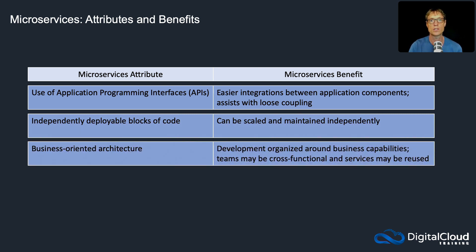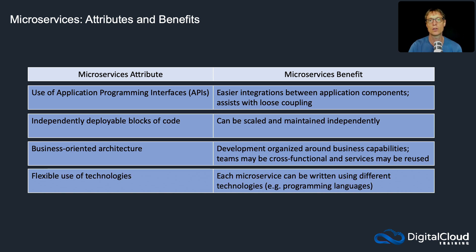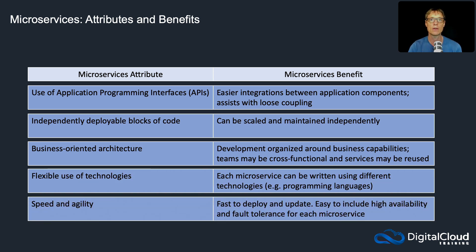You also have what we call a business-oriented architecture, meaning you can organize your development around your business capabilities. Teams can be cross-functional, working across different blocks of code, and they might even be able to reuse code across different application components. We also have the flexible use of technologies — each microservice can be written using different technologies, so you might have different programming languages in use. Sometimes that can be difficult on a single underlying operating system, but with microservices it becomes a lot easier. And lastly, we have speed and agility — microservices are super fast to deploy and easy to update, and you can easily add high availability and fault tolerance using auto scaling and load balancing.